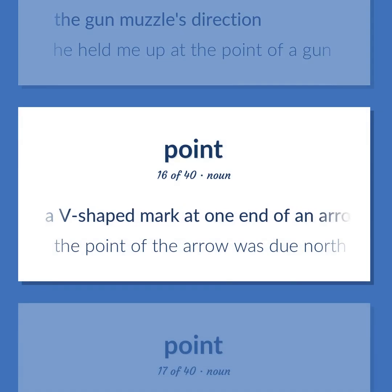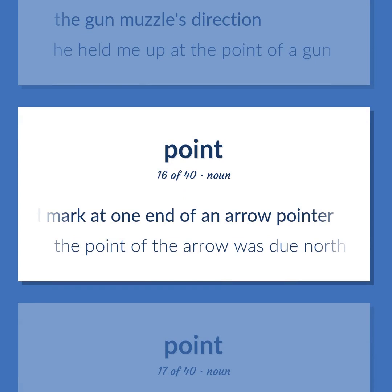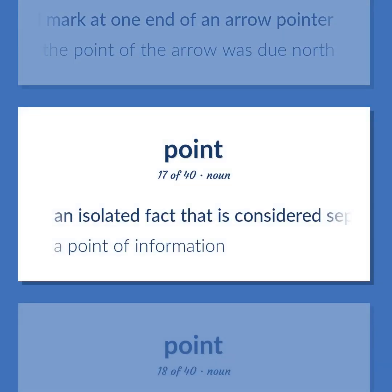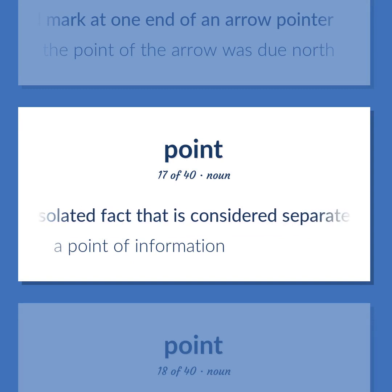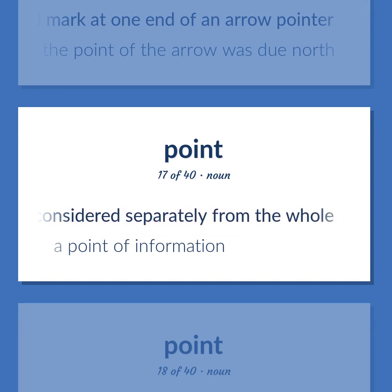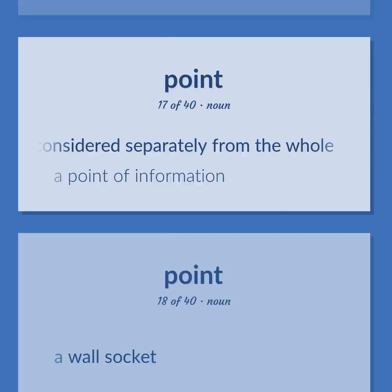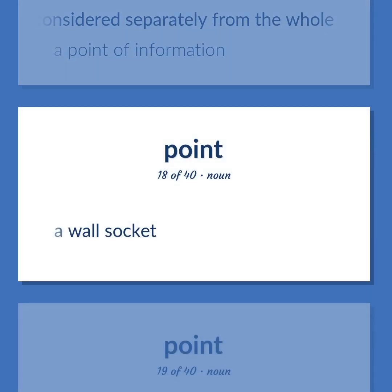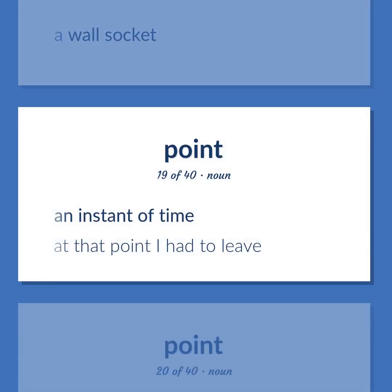Point: A V-shaped mark at one end of an arrow pointer. Example: The point of the arrow was due north. An isolated fact that is considered separately from the whole. A point of information. A wall socket. An instant of time. Example: At that point, I had to leave.